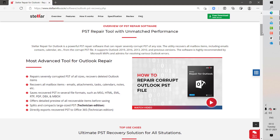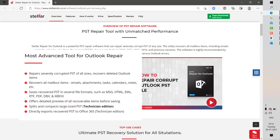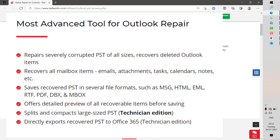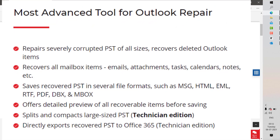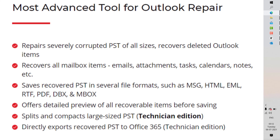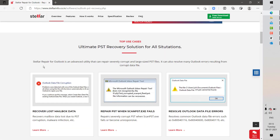Let's talk about why Stella Repair for Outlook is the most advanced tool for Outlook repair. It repairs severely corrupted PST files of all sizes and recovers deleted Outlook items. It recovers all mailbox items including emails, attachments, tasks, calendar, and notes. It also saves the recovered PST in several file formats such as .msg, HTML, EML, RTF, PDF, DBX, and MBOX. It offers detailed preview of all recoverable items before saving. The Technician Edition also allows you to split and compact large PST files and directly export recovered PST to Office 365.